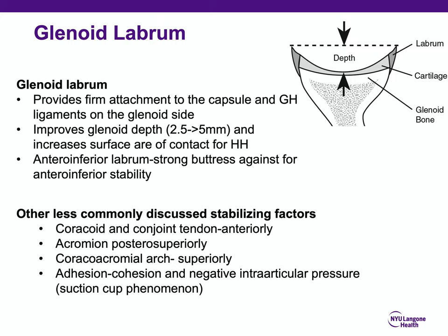There are other factors that contribute to shoulder stability, though they may not be critical determinants. The glenoid labrum provides firm attachment to the capsule and glenohumeral ligaments, and increases glenoid depth from 2.5 to 5 mm, increasing the surface area of contact. Other stabilizing factors include the coracoid and conjoint tendon anteriorly, the subscapularis tendon, the acromion posterosuperiorly, the coracoacromial arch superiorly, and the adhesion-cohesion or suction cup phenomenon, which provides restraint to inferior translation.